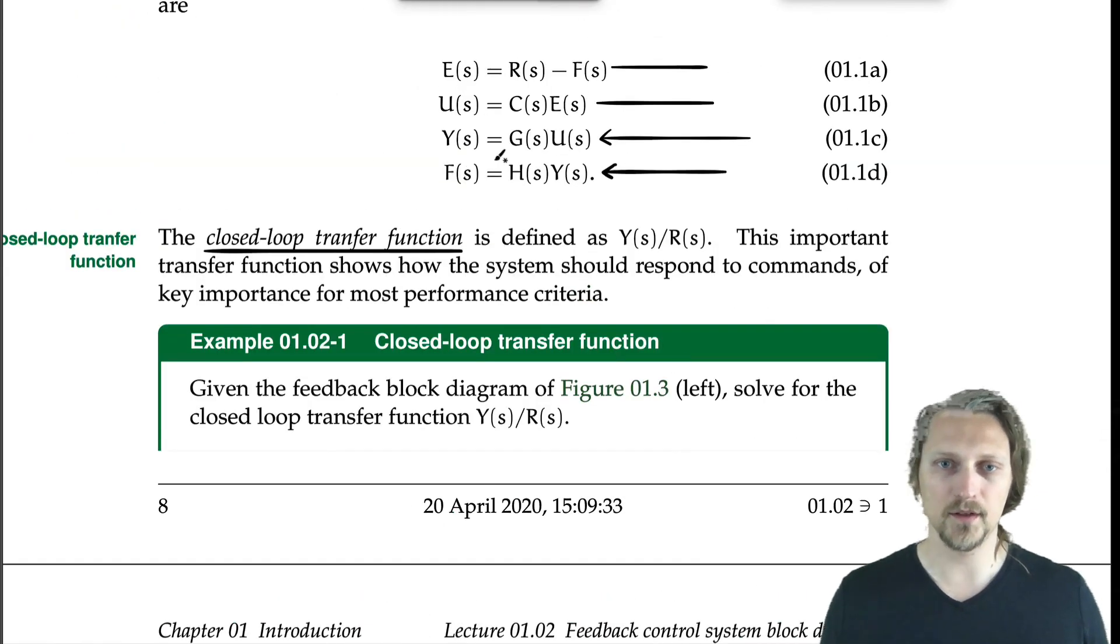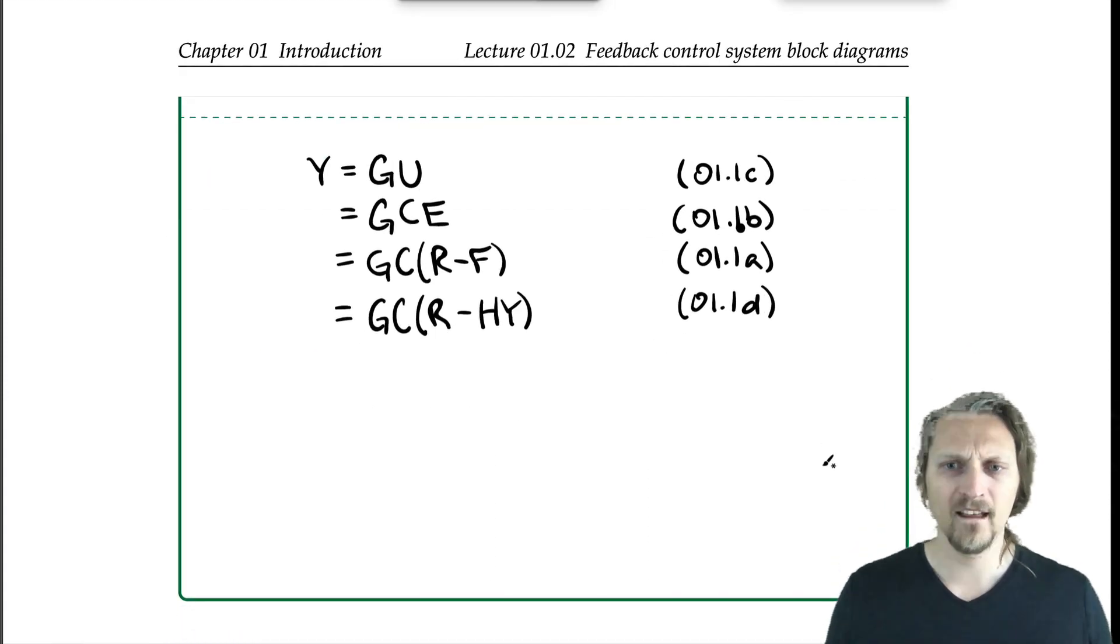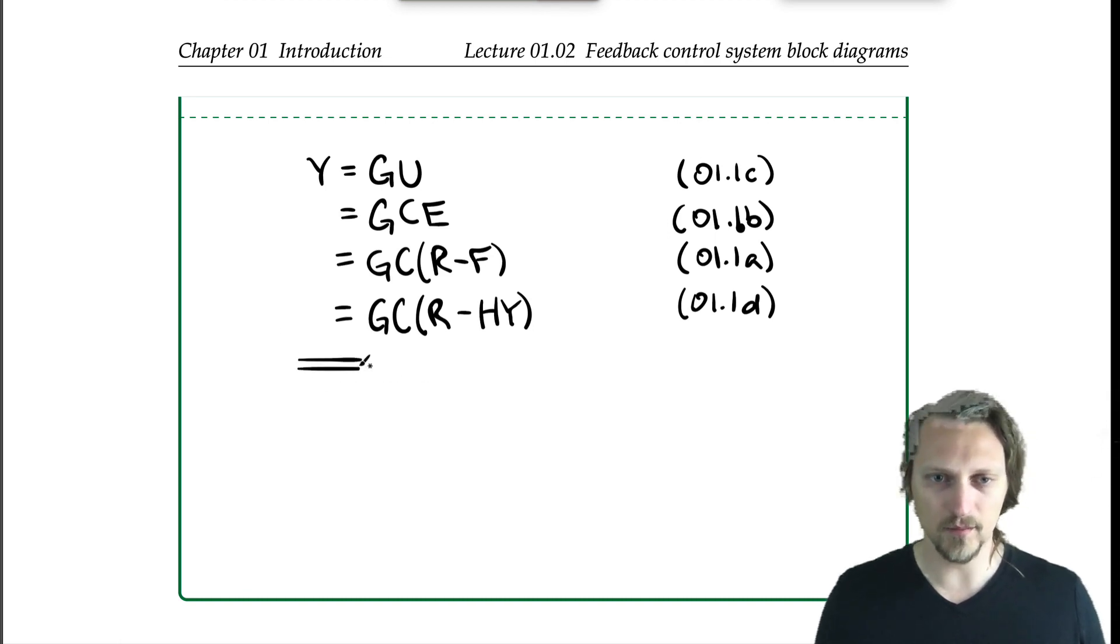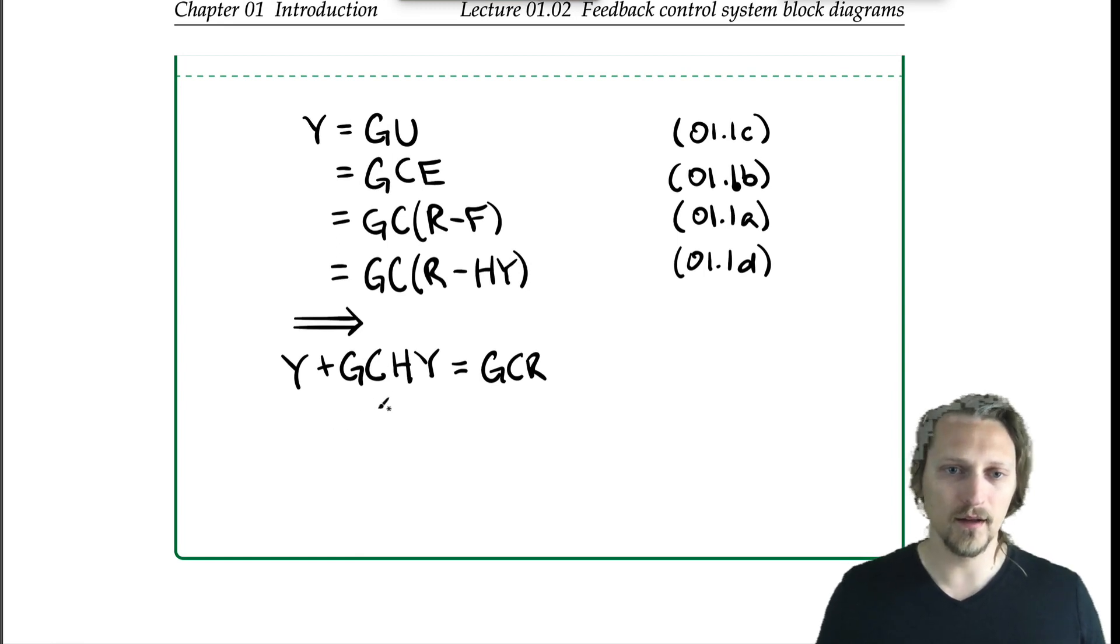Now we have Y on both sides. We don't have any of the intermediate variables left. We've eliminated U, E, and F, so we can rearrange this. This implies that Y plus GCHY equals GCR. We've just added GCHY to both sides and distributed GC to both terms. We can factor out Y and divide both sides by what factors out, which is 1 plus GCH.